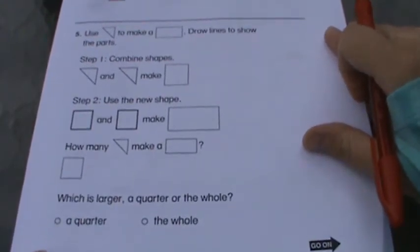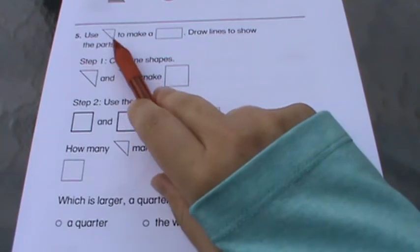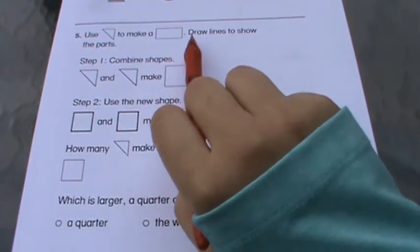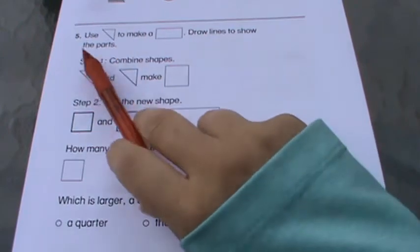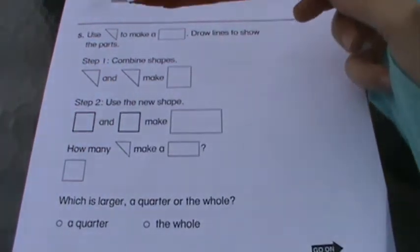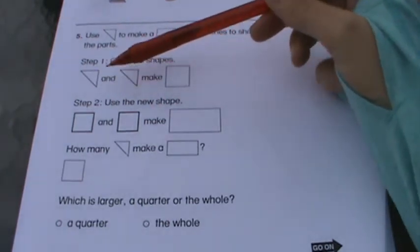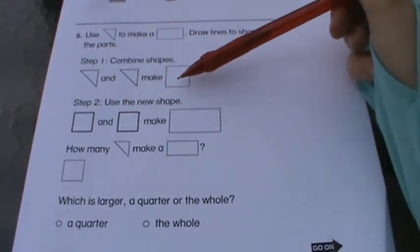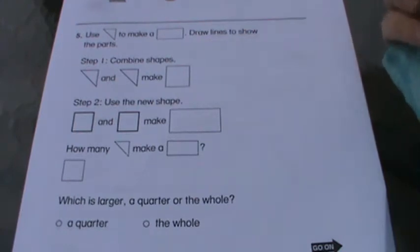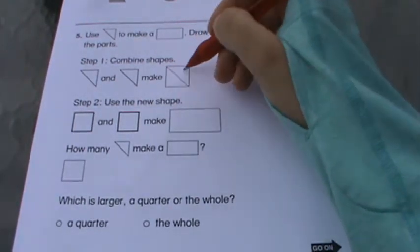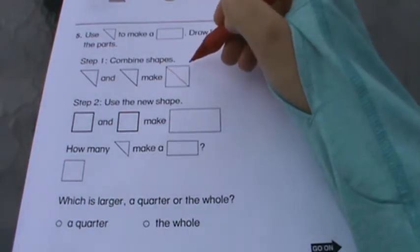Number five, use a triangle to make this new shape. Make a rectangle. Draw lines to show the parts. So they're going to walk you through it. Step one: combine this triangle and this triangle. It's going to give you a square, right? It would be here and here. Put it together and make a square.